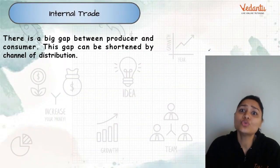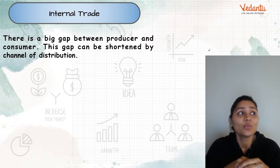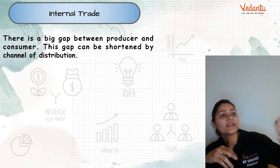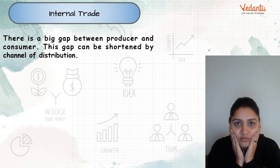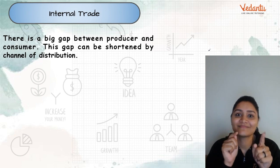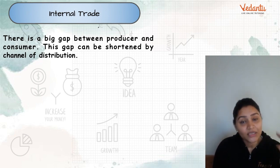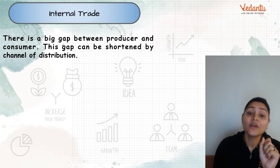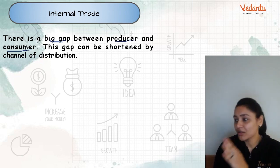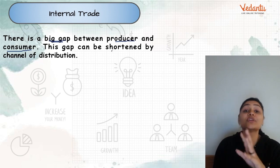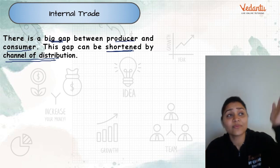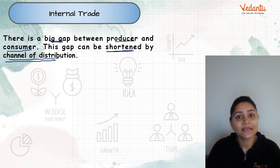When talking about internal trade within the country, there is a big gap between the producer at one location and the consumer at another location — for example from Delhi to Kanya Kumari, it's a big distance. When the producer and consumer are not at the same location, there is a gap. To shorten this gap, we use a channel of distribution. When we use a particular channel, the gap is reduced.